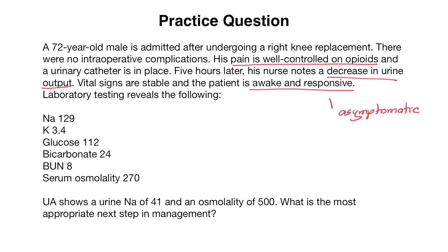Laboratory testing reveals: sodium 129, potassium 3.4, glucose 112, bicarb 24, BUN 8, and serum osmolality of 270. The sodium is 129 and the serum osmolality is on the lower end. UA shows a urine sodium of 41 and an osmolality of 500 — so we have an elevated urine sodium greater than 40 and an osmolality of 500, well above the threshold of 100 discussed. The question asks for the most appropriate next step in management. The question stem is pointing towards SIADH, and in a patient with mild hyponatremia who is asymptomatic, the most appropriate next step would be fluid restriction.